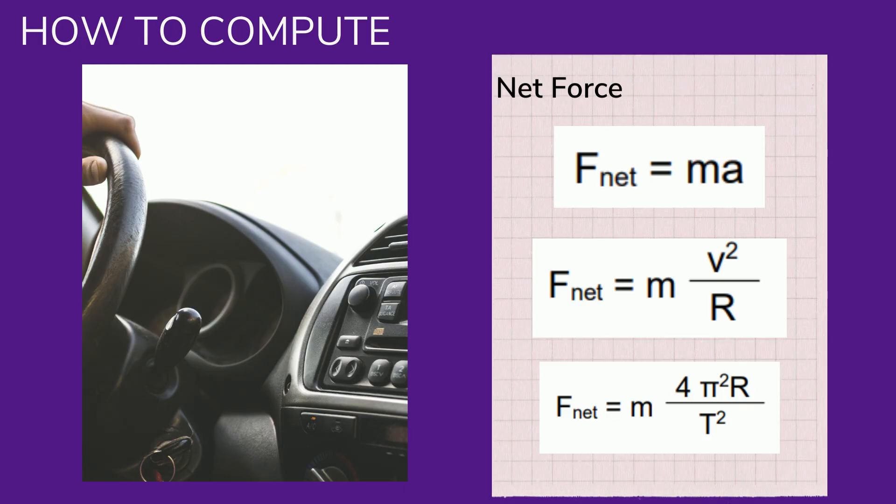Fnet = ma, or the mass multiplied by acceleration. Fnet = m × v²/R, and Fnet = m × 4π²R/T², where m is the mass, v is the velocity, R is the radius, and T is the period.